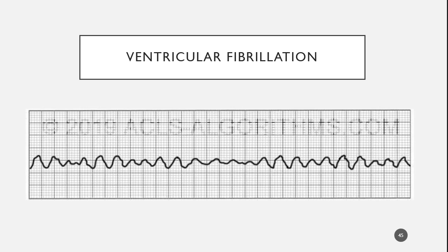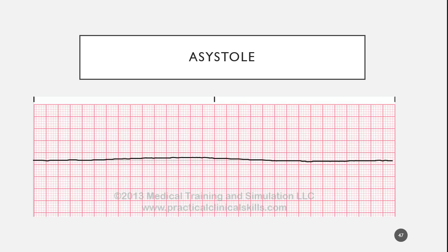A patient with coarse V-fib has a greater chance of survival than one with fine V-fib — because coarse means more electrical activity. When it goes down to fine, it's just a short step away from asystole, which has no electrical activity. The less electrical activity you have, the less likelihood you'll be able to resuscitate somebody. Resuscitation from asystole is less than 5%.